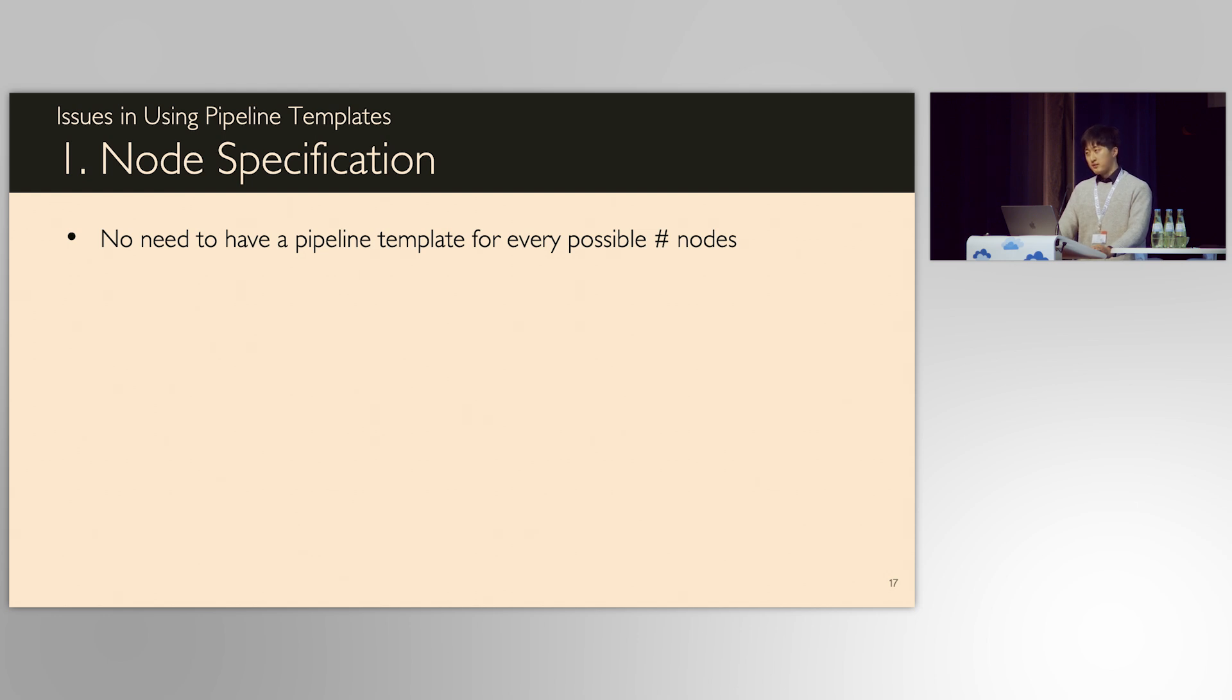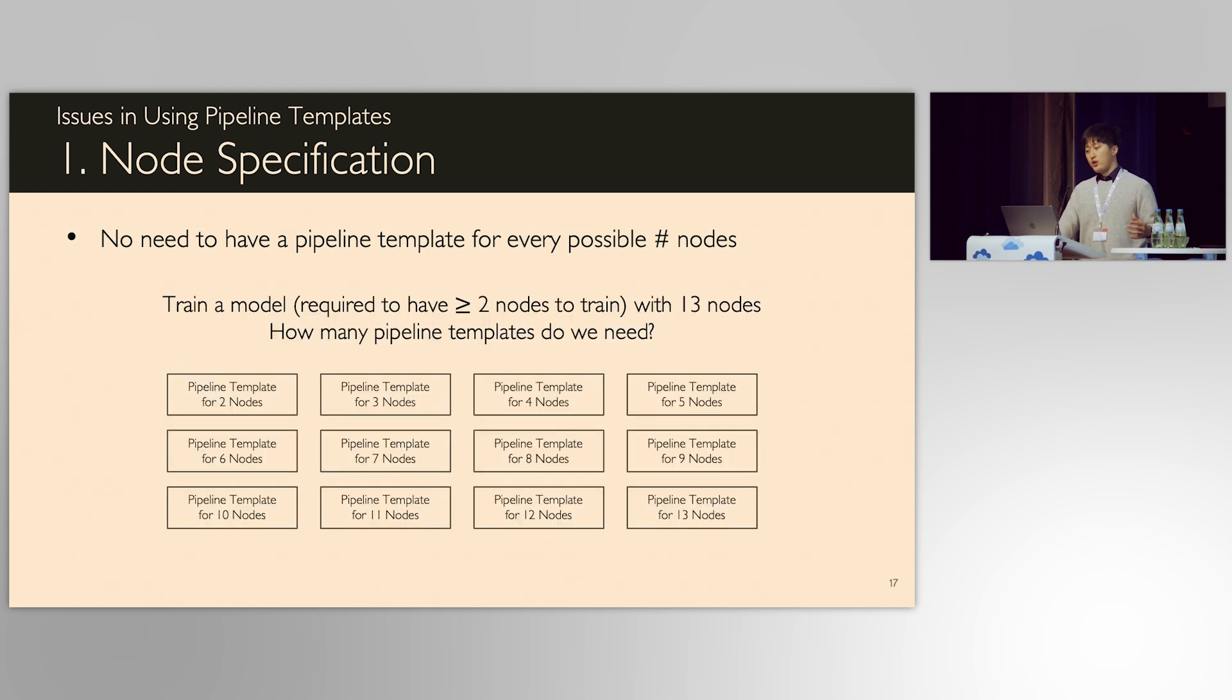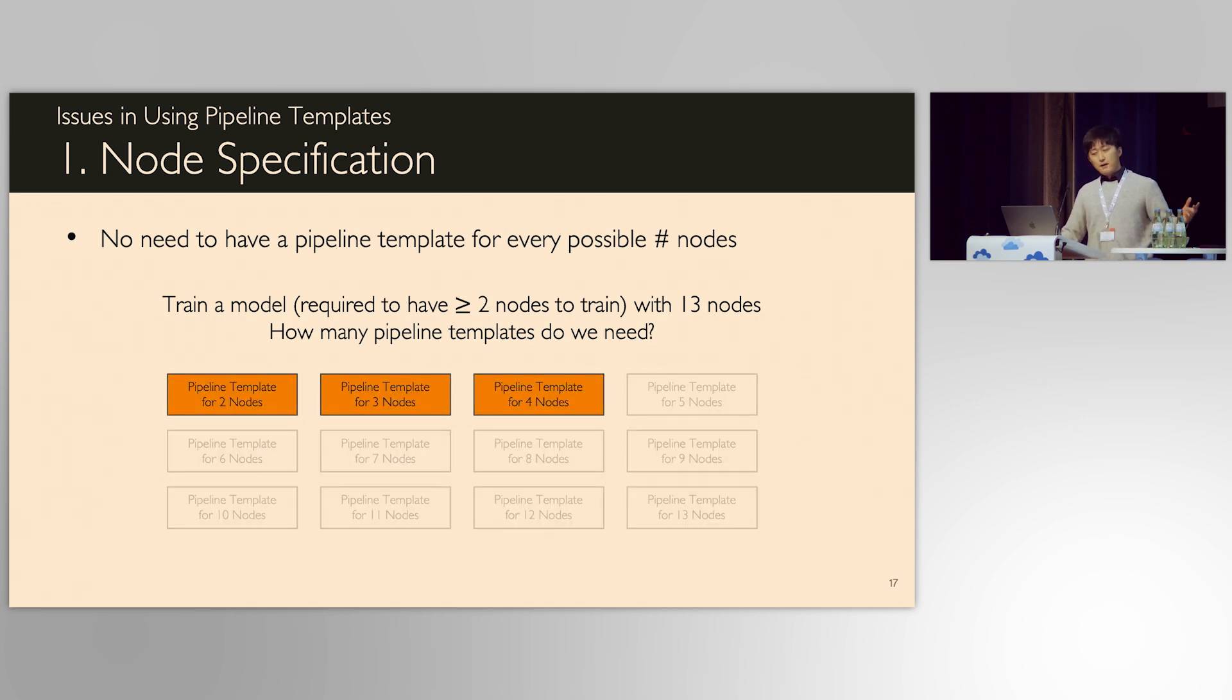First, how many pipeline templates are actually needed? It is, of course, possible to have pipeline templates for every possible number of nodes. For example, if we train a model with 13 nodes, we can simply have pipeline templates for up to 13 nodes. But, as you know, it is very inefficient considering we might want to use up to hundreds of nodes. In fact, in this example of 13 nodes, only these three pipeline templates are enough to cover.